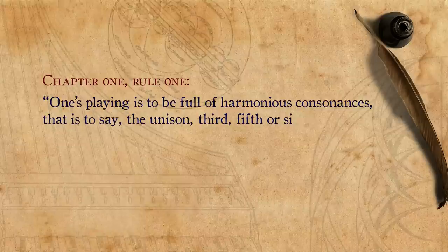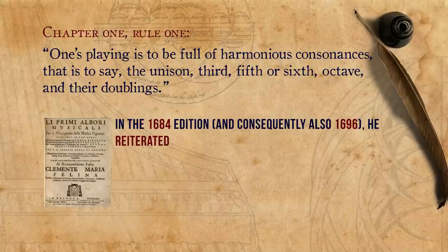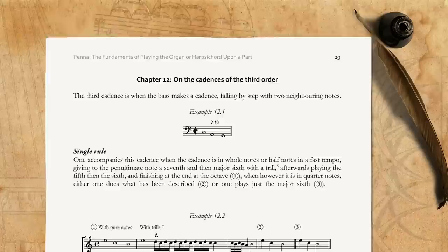Penna's very first rule in the very first chapter is that one's playing is to be full of harmonious consonances — that is to say, the unison, third, fifth or sixth, octave, and their doublings. In the 1684 edition, and consequently also in 1696, he reiterated this advice in similar statements throughout the treatise.